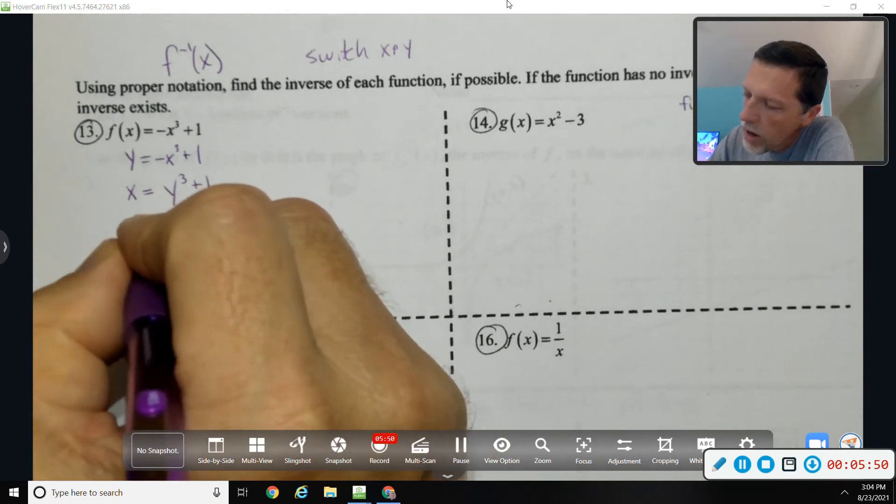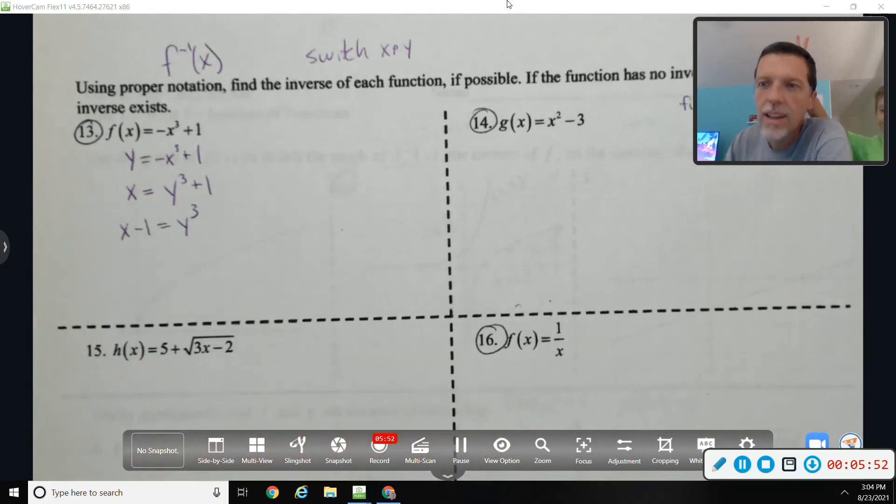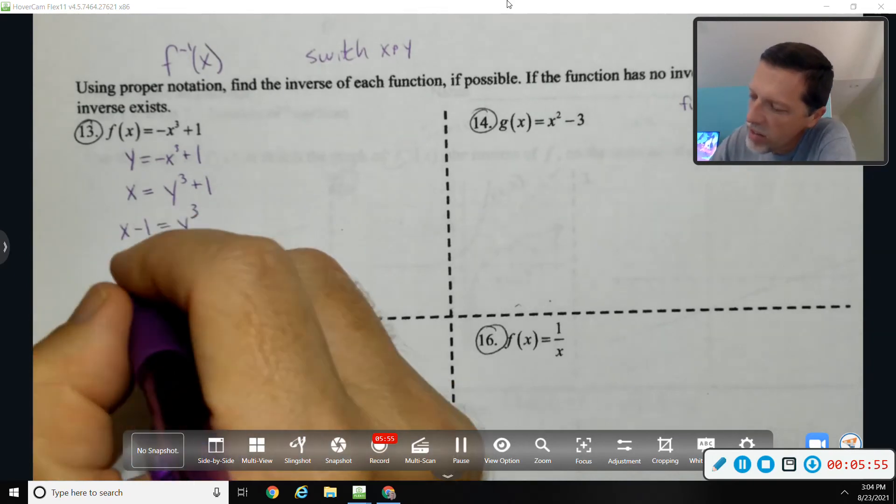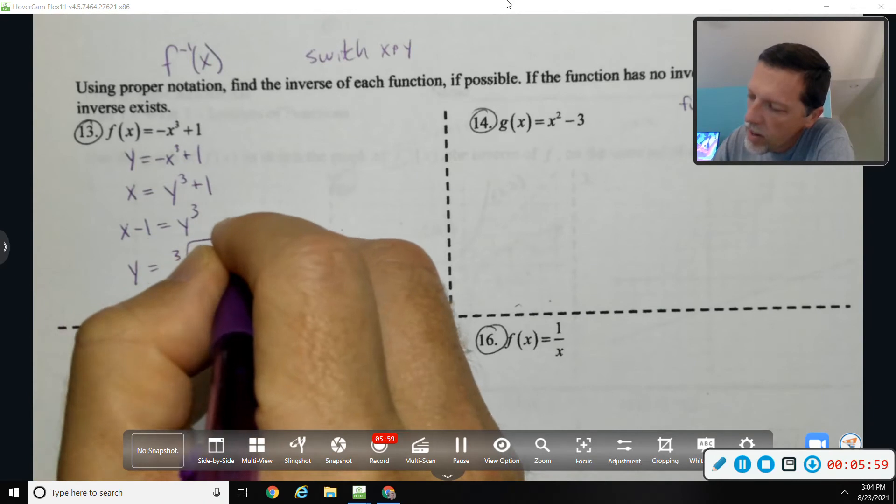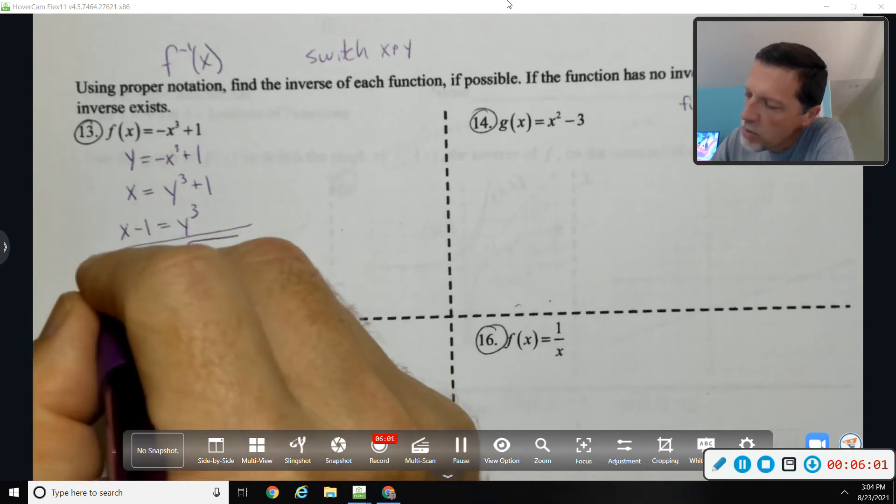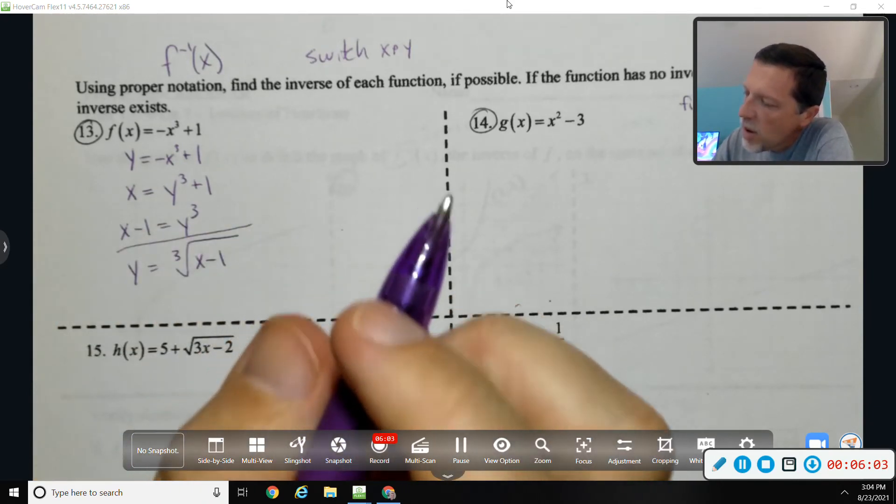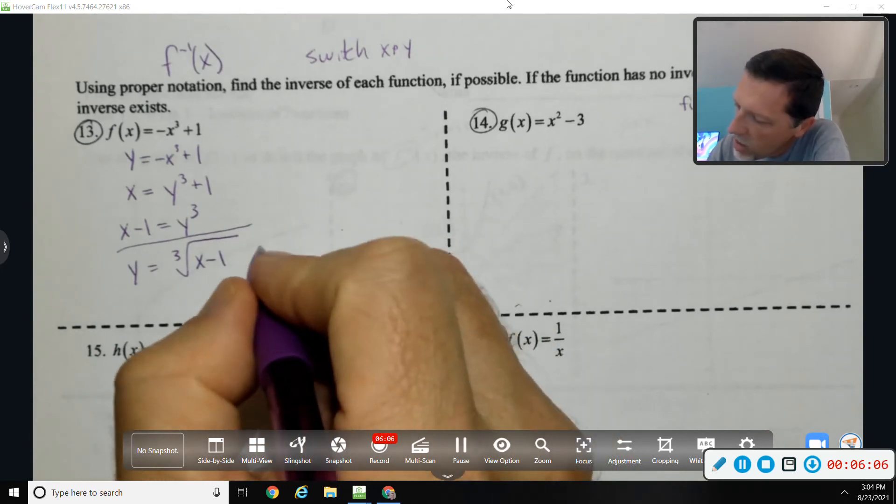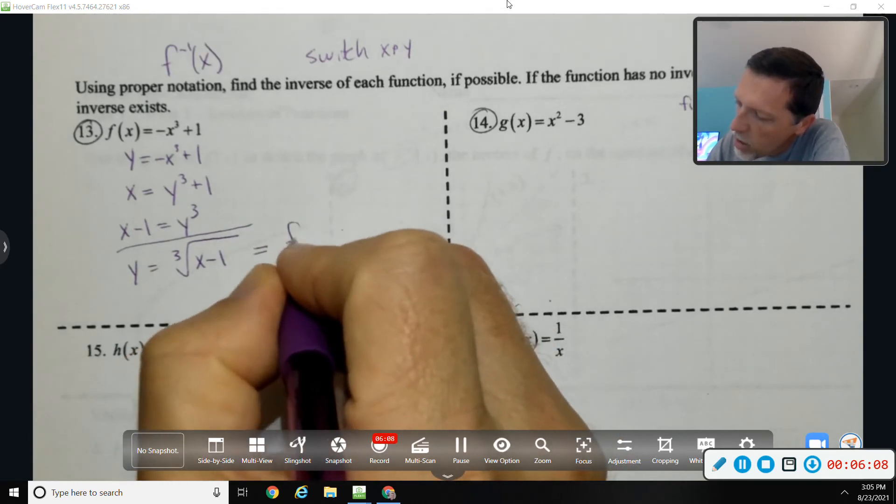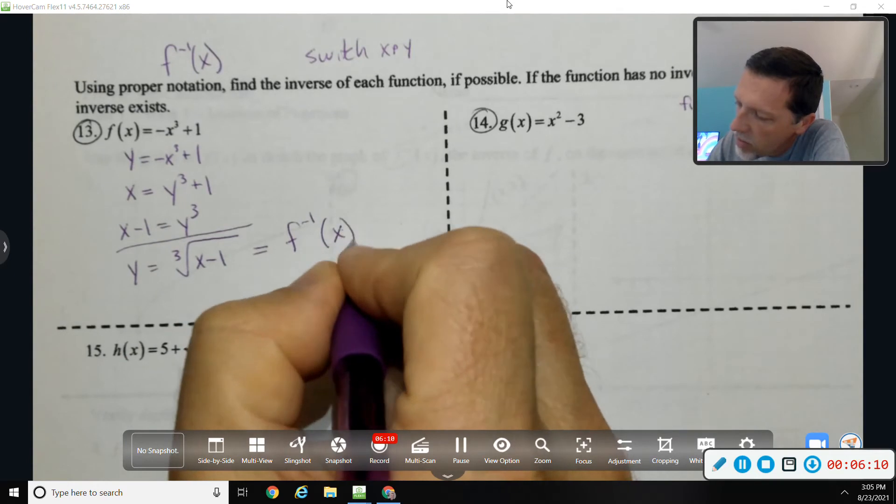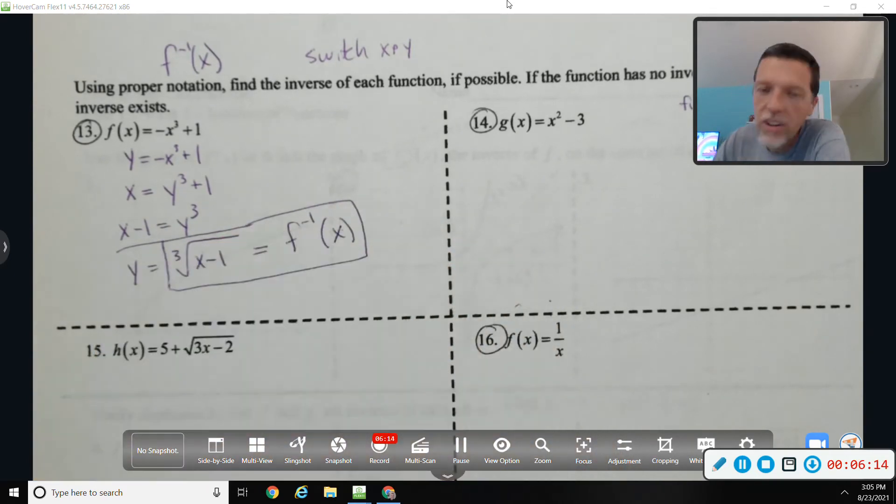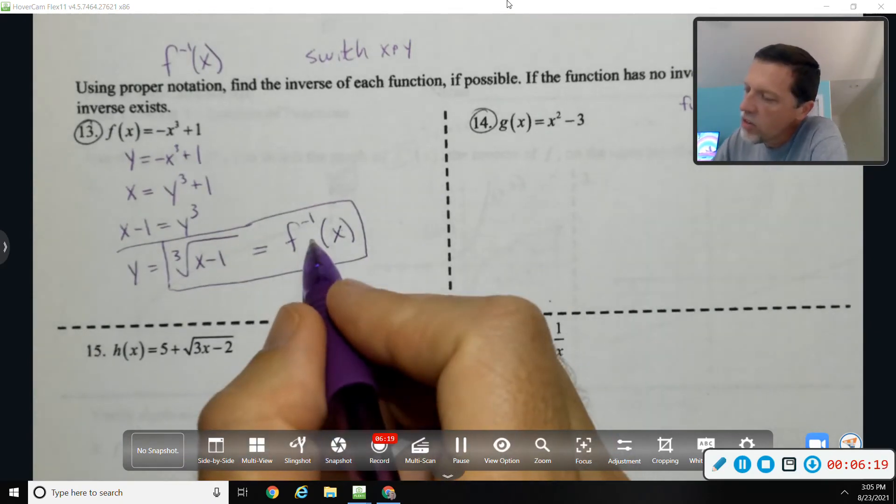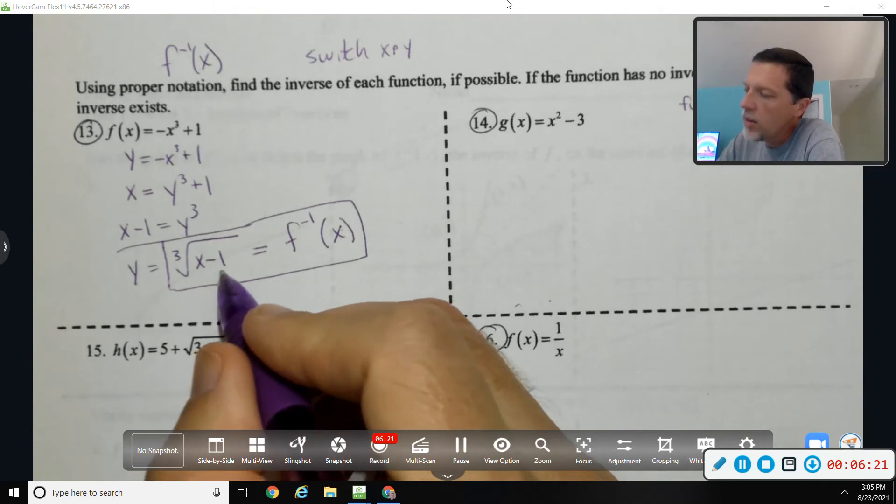So let's subtract one, and then we'll cube root both sides. So y is the cube root of x minus one. I don't want to box it up because it's not quite proper notation yet. Proper notation would be the inverse of f. Here we go. How's that for skirting around the rules a little bit? So with proper notation, the inverse of f is the cube root of x minus one.